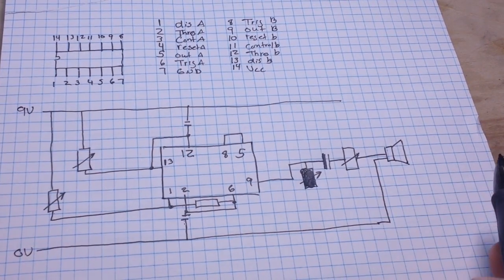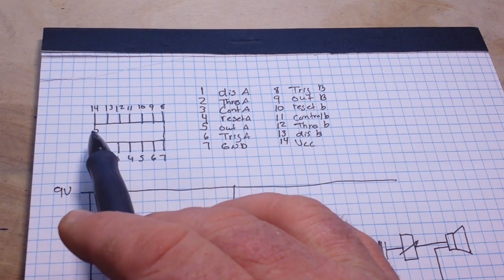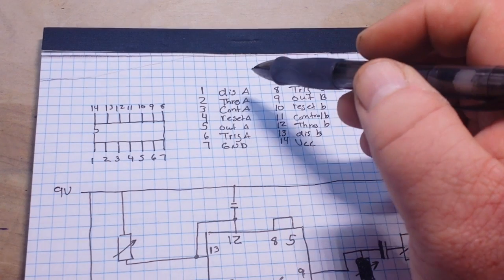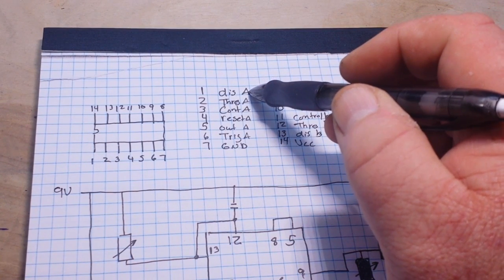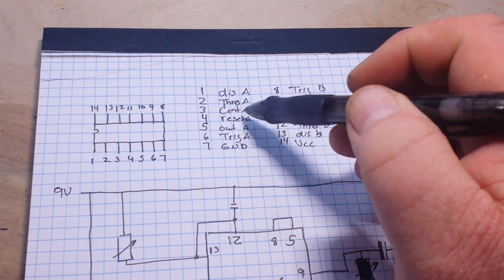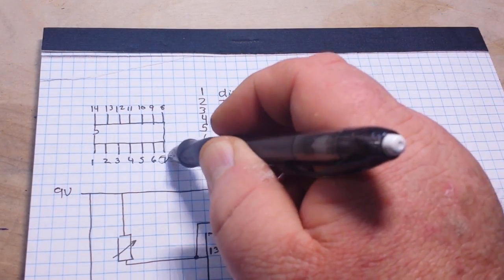So, if we look here at the 556 timer, you can see it's a 14-pin chip, and like I said, it is just two 555s. So, pin 1, discharge A, threshold A, control A, reset A, out A, and trigger A, and pin 7 is ground.